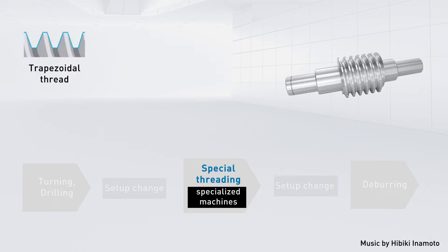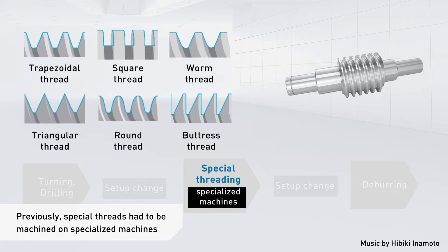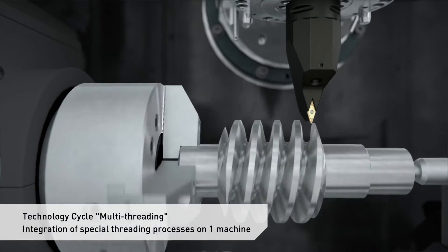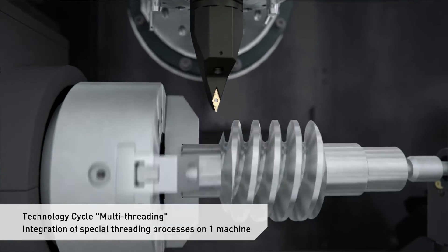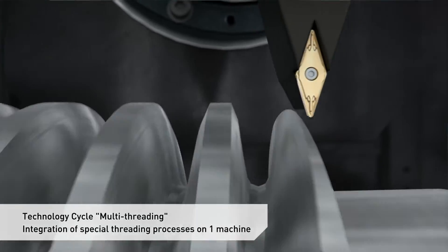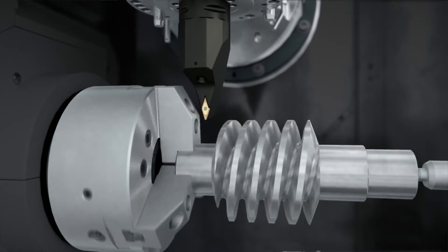Until now, the machining of special threads with trapezoidal, square, worm and other complex geometries required specialized machines. With the technology cycle multithreading, these specialized machining processes can be realized on turning and mid-turn centers. They can be integrated into one machine, leading to unprecedented efficiency.